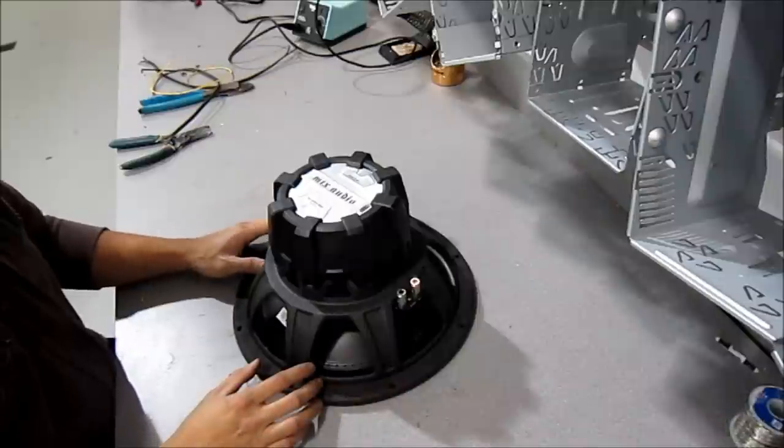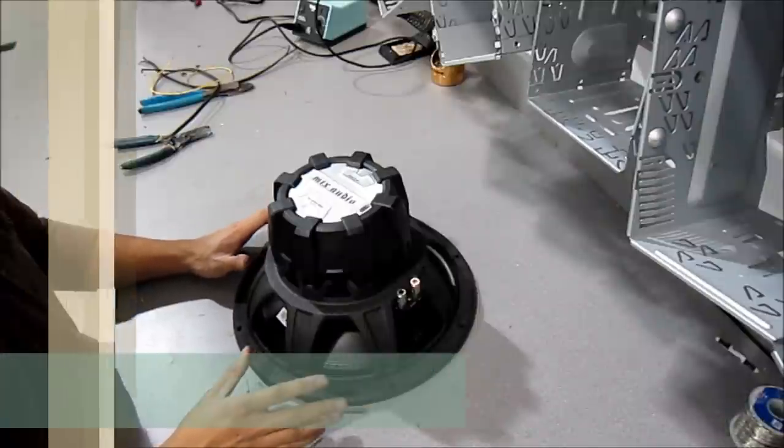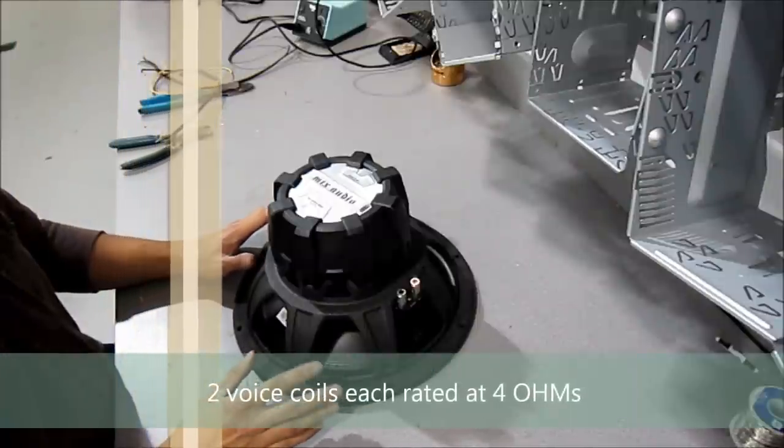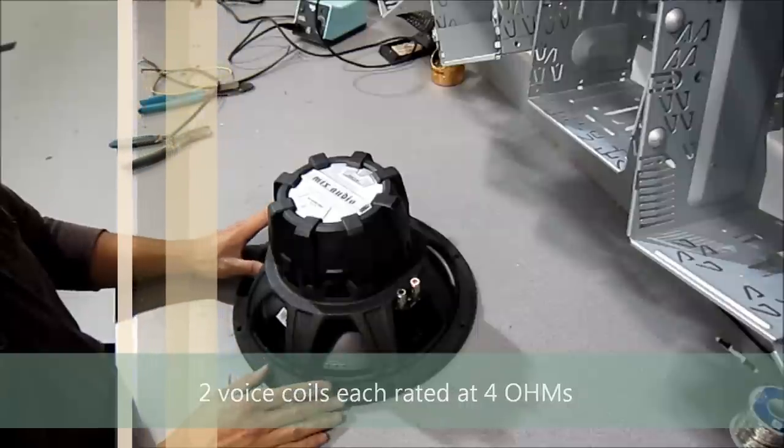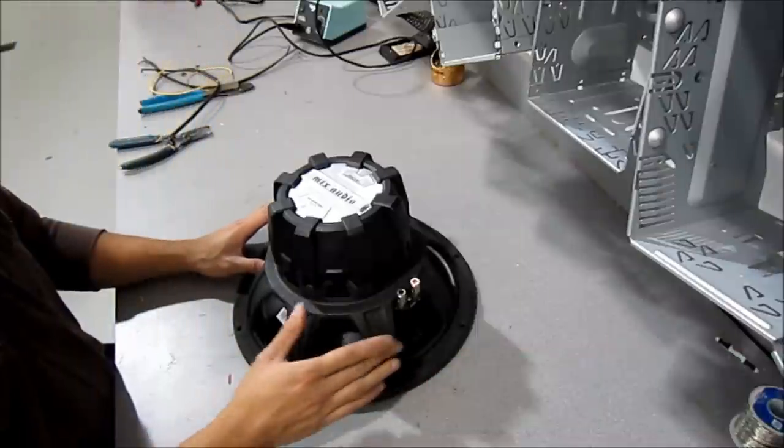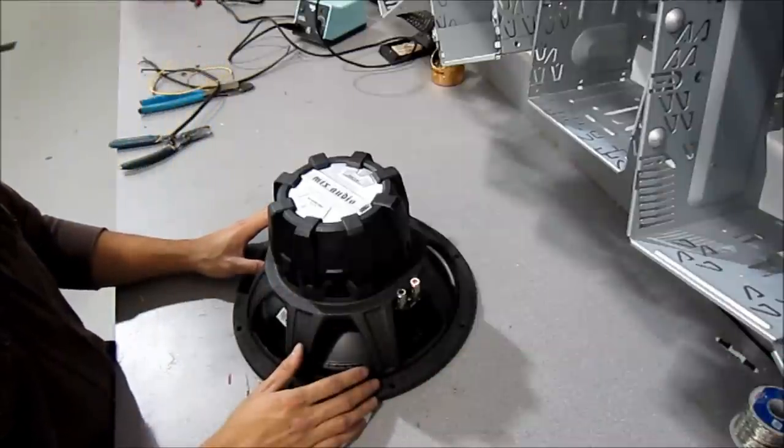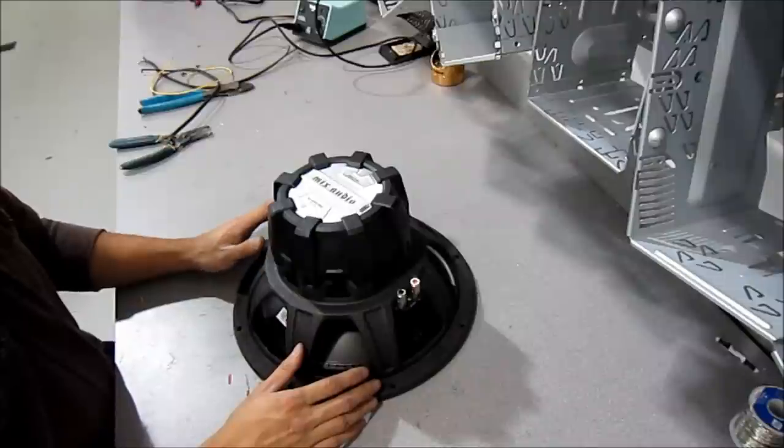I also want to mention today's example was done with a dual voice coil sub that is rated at 4 ohms each. So if you're working with a subwoofer that was rated at 2 ohms for each voice coil, then our numbers are going to change. Keep that in mind.